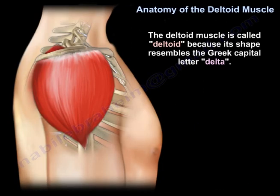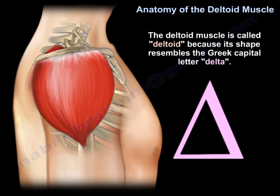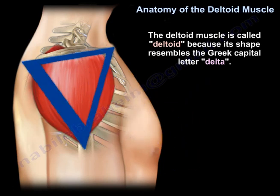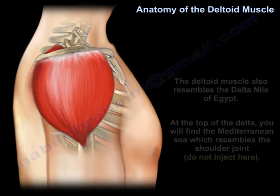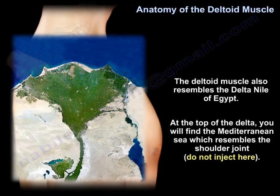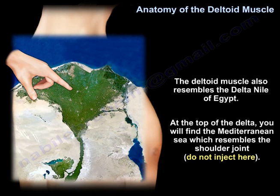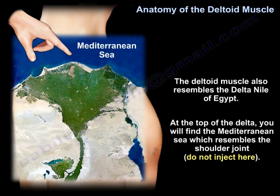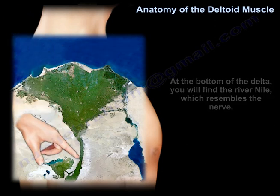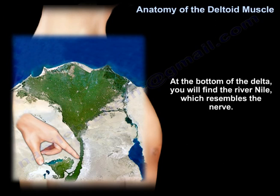The deltoid muscle is called deltoid because it resembles the Greek capital letter delta. It also resembles the Nile delta of Egypt. At the top of the delta you will find the Mediterranean Sea, which resembles the shoulder joint — you do not want to inject there. At the bottom of the delta you will find the river Nile, which resembles the nerve — you do not want to inject there either.